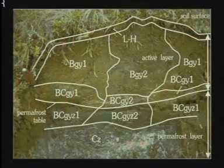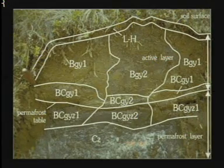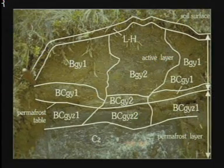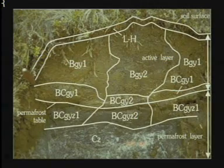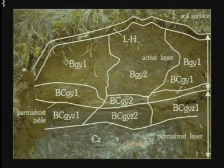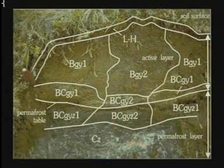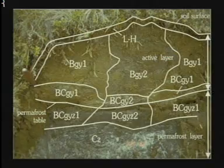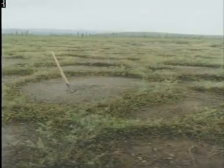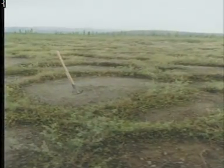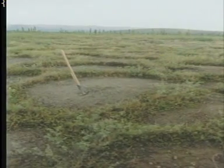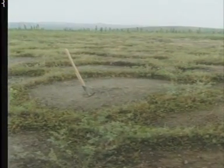The turbic cryosols are the most common, making up about 70% of cryosols. In this great group, the vigorous action of cryoturbation leads to highly disrupted soil horizons and distinctive surface forms. In this example from the Mackenzie River Delta, note the size and shape of this earth hummock with its continuous vegetation cover. In contrast, unsorted circles are unvegetated at their centers, as shown by this example from the northern Yukon.